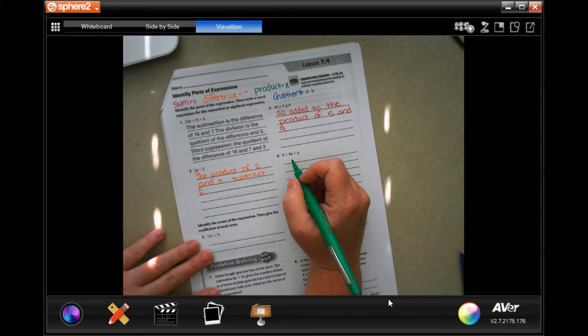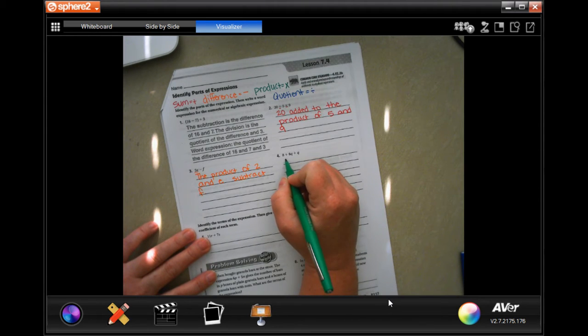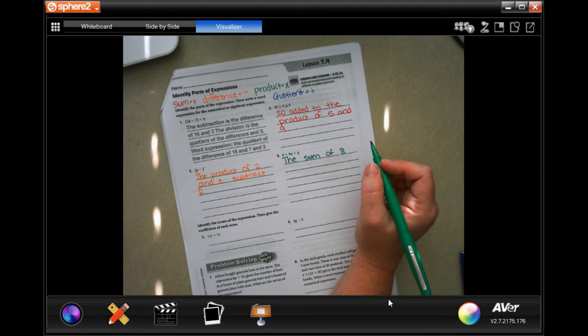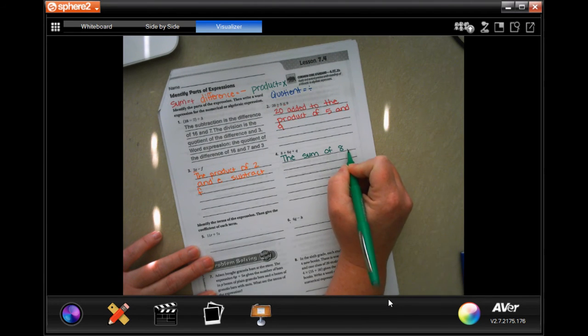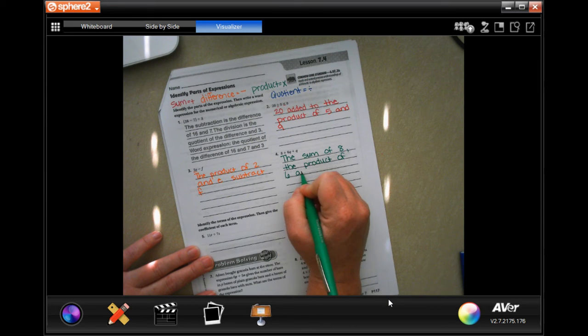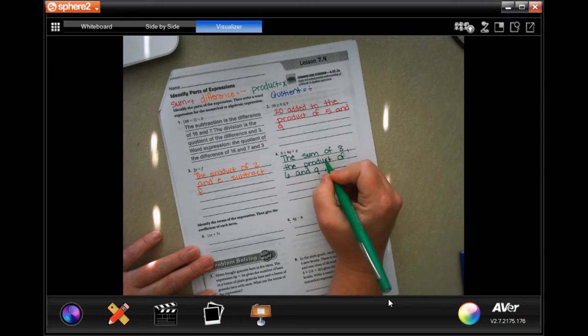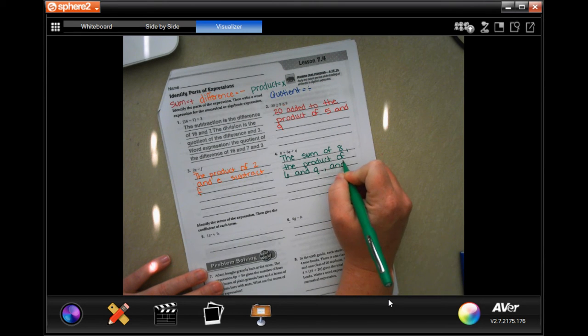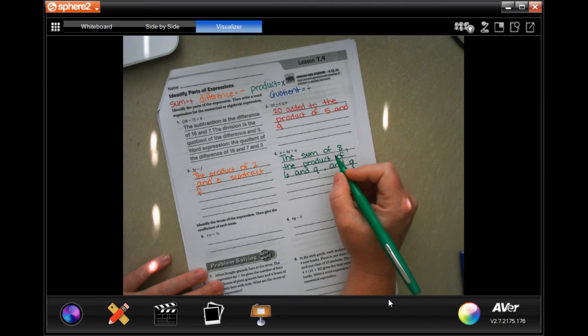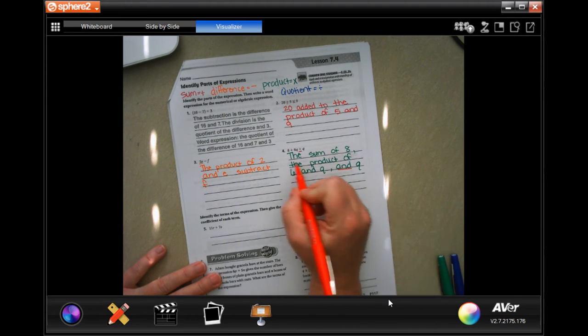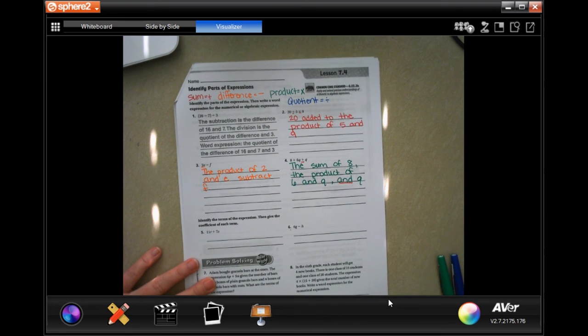This one says the sum of eight and the product of six and Q. And then, you're saying and it means addition. So that addition right there, product because six Q is the same as six times Q.